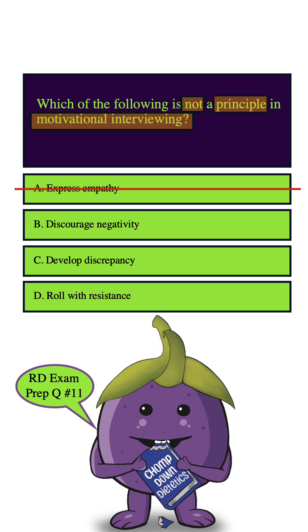How about C. Developing discrepancy. Developing discrepancy is a key principle in motivational interviewing — it's about helping the person see the differences between where they are now and where they want to be. By pointing out those differences, it can get them thinking about making changes. So it is a principle in motivational interviewing, which means we can eliminate it.